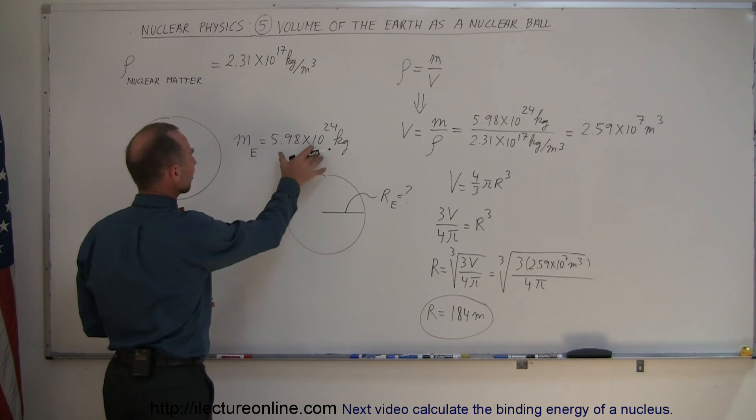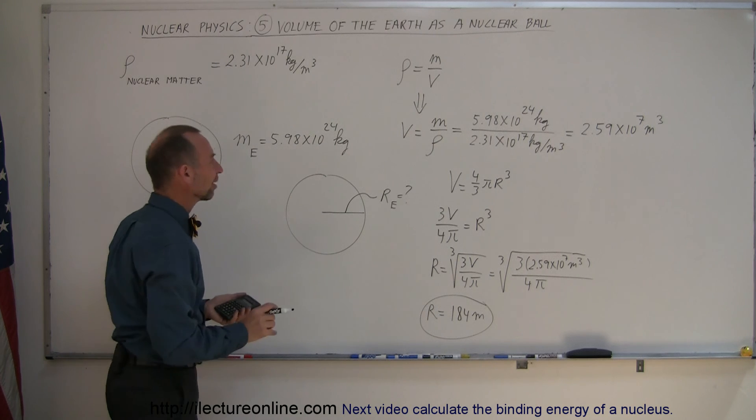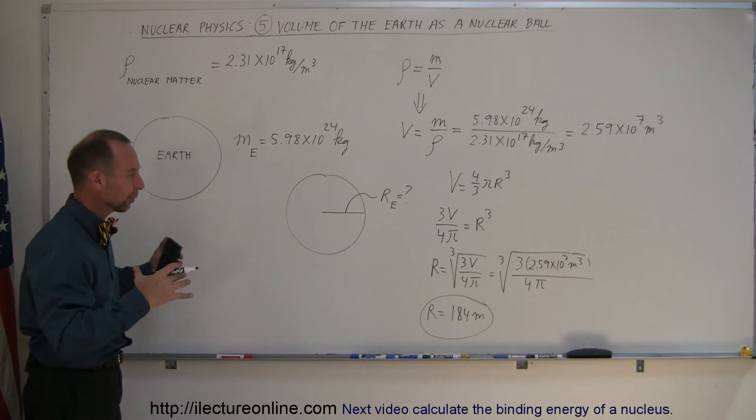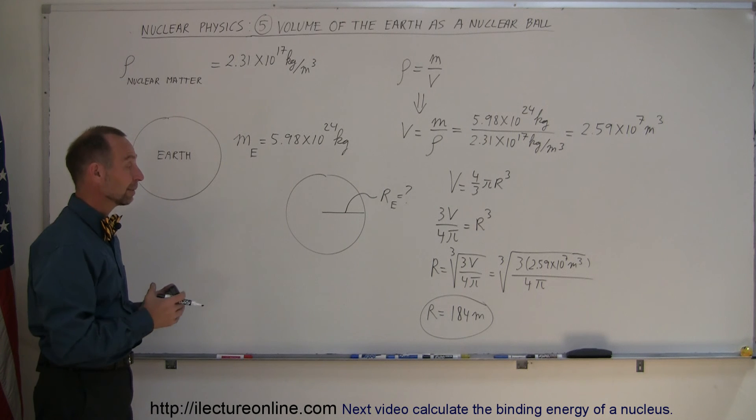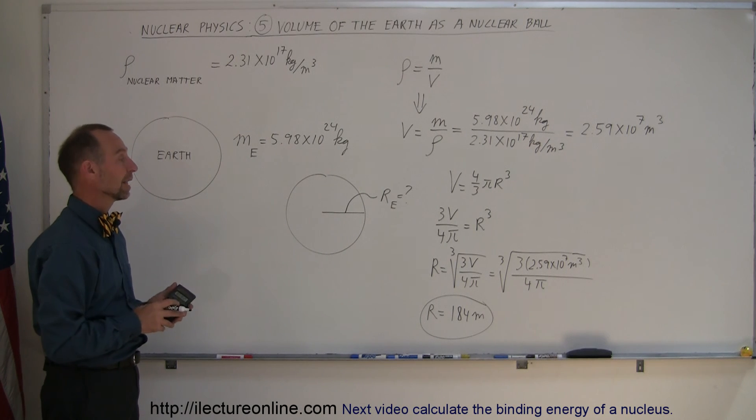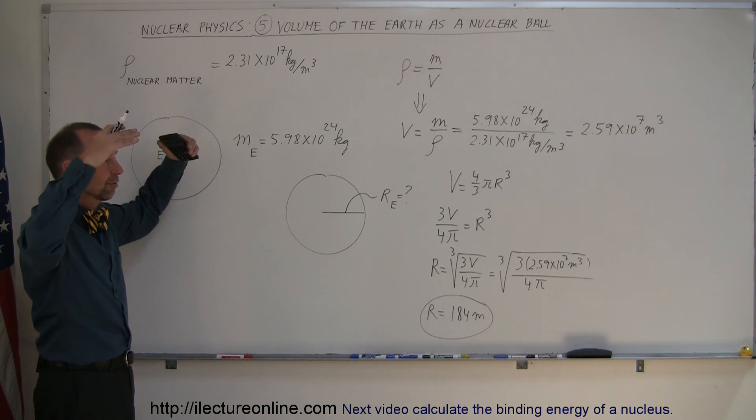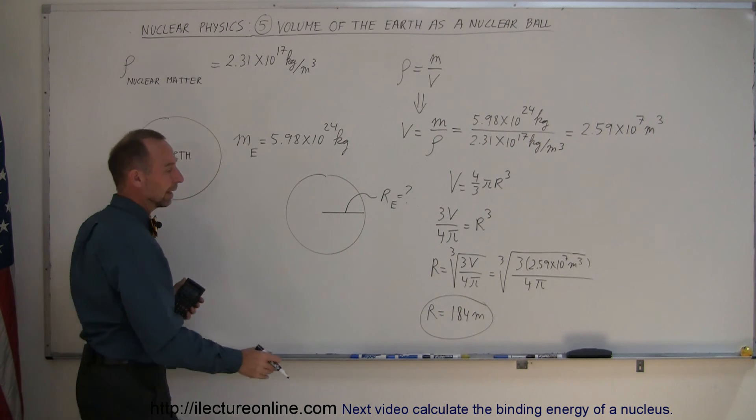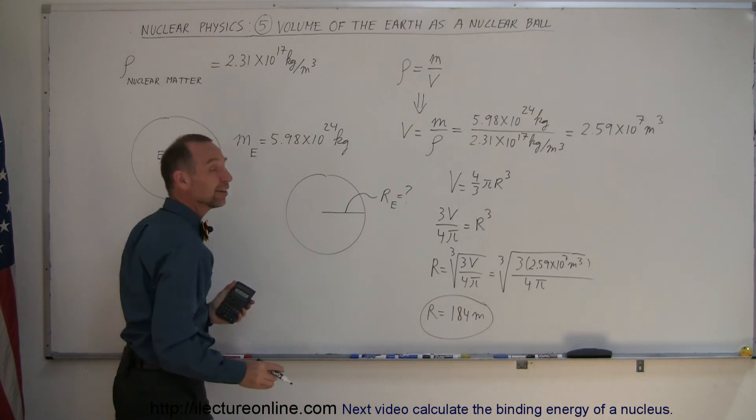Of course, the Earth would have still the mass of 5.98 times 10 to the 24 kilograms. I don't know how you're going to hold it in place. It would fall right through. But that's astounding when you think about it. You could take the entire Earth's volume, squish it together, and the radius of the Earth would be no bigger than 184 meters.